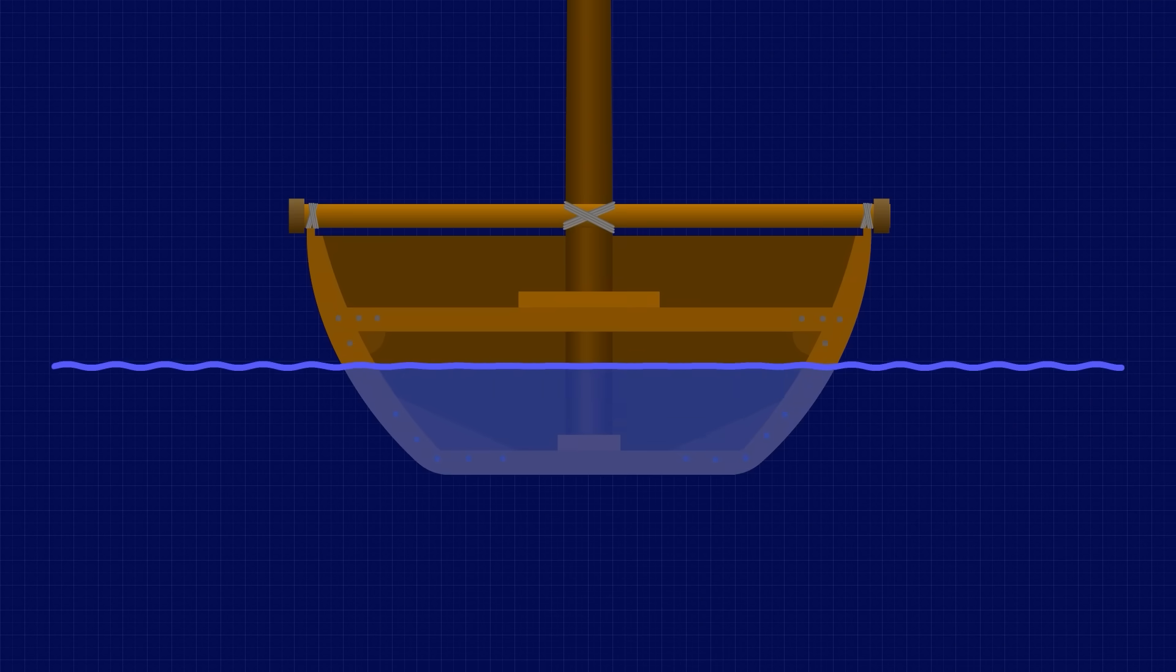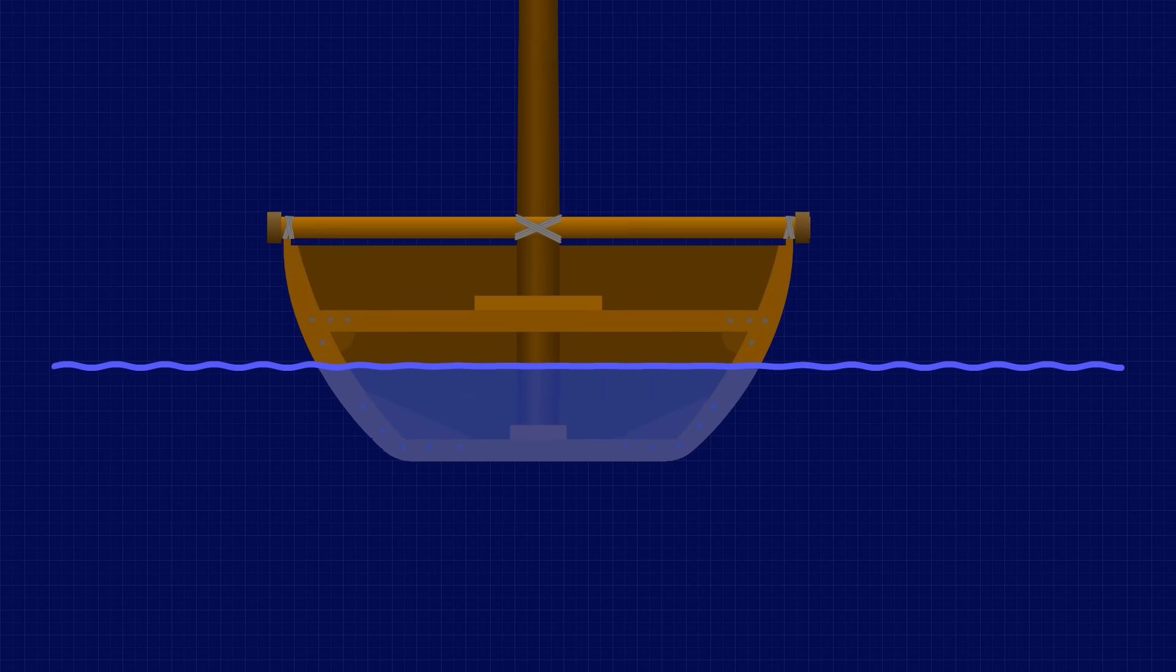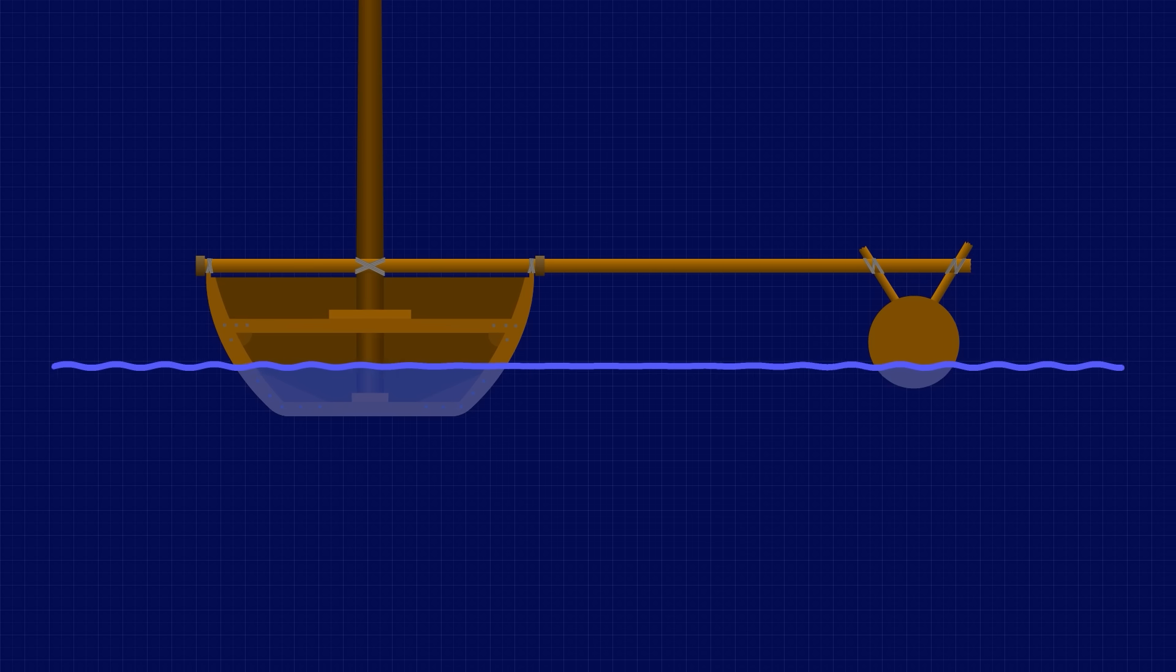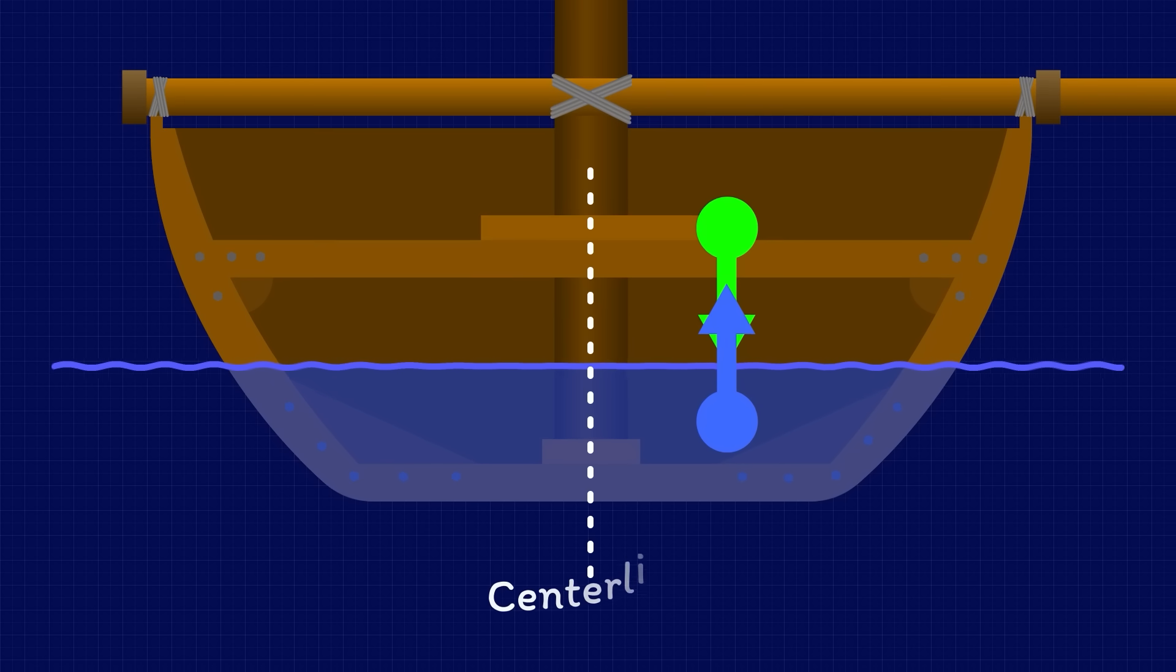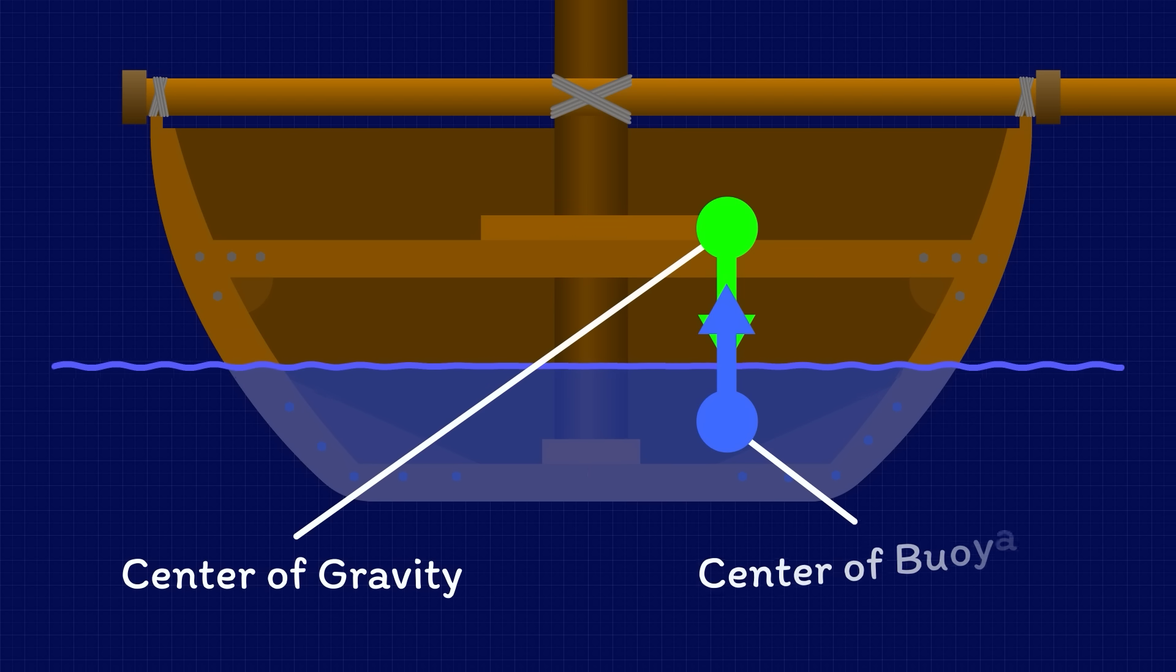An outrigger canoe basically consists of a large hull which provides sufficient buoyancy for carrying lots of cargo and an outrigger to make it stable. The centre of gravity of the composite unit is somewhere around here and the centre of buoyancy is somewhere around here. Both are slightly off centre from the main hull thanks to the presence of the outrigger, but notice how the centre of gravity is now above the centre of buoyancy.